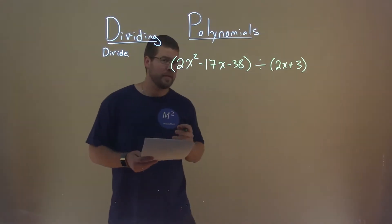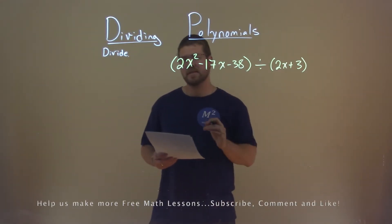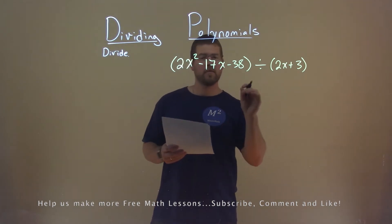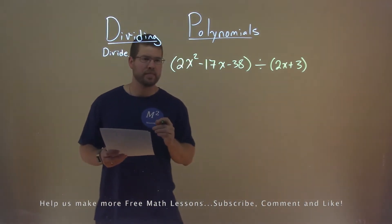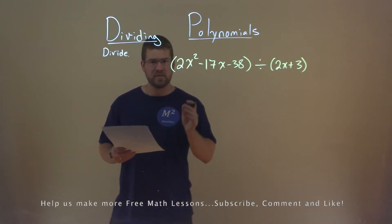We're given this problem right here. 2x squared minus 17x minus 38 divided by 2x plus 3, and we need to divide these. Let's do some long division, so let's set this up.